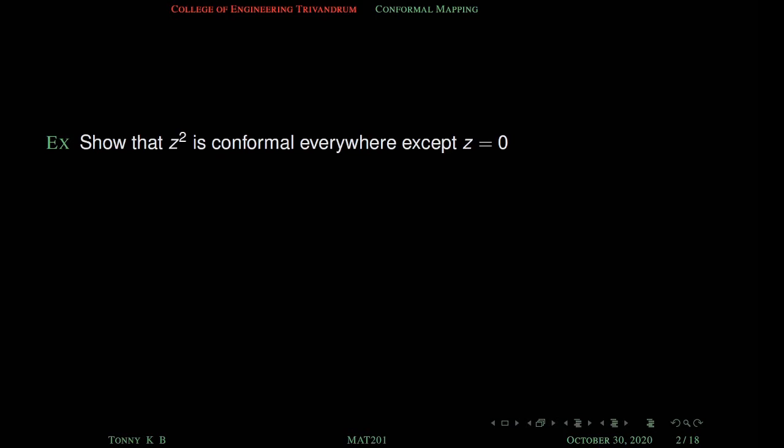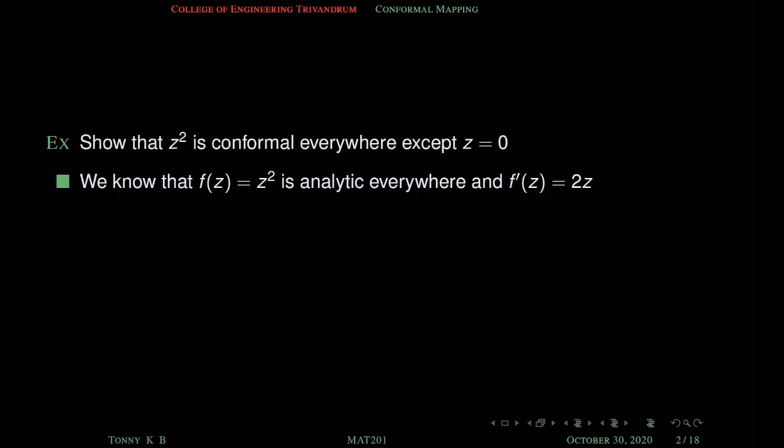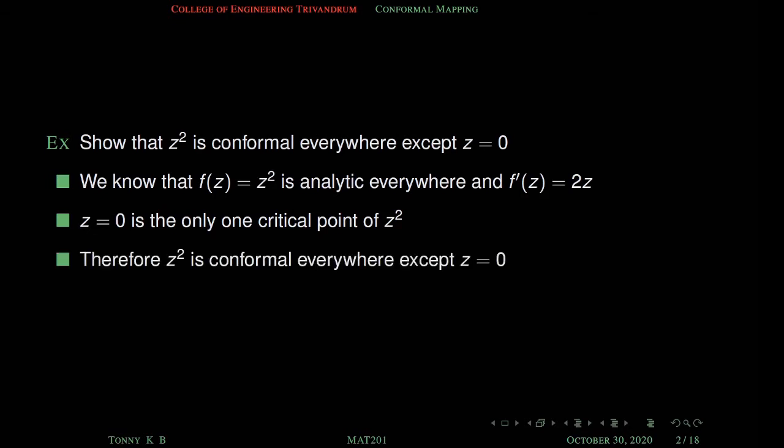Example: Show that z square is conformal everywhere except at z equal to zero. We know that f(z) equal to z square is analytic everywhere and f'(z) equal to 2z. Setting f'(z) equal to zero gives z equal to zero, so z equal to zero is the only critical point. By the previous result, z square is conformal everywhere except at z equal to zero.